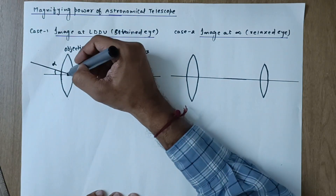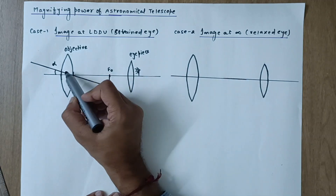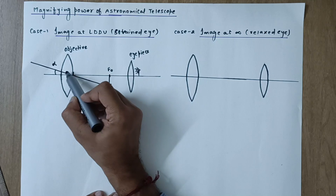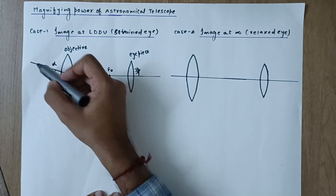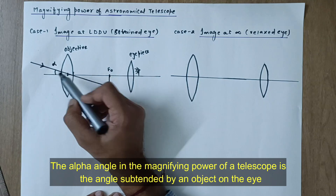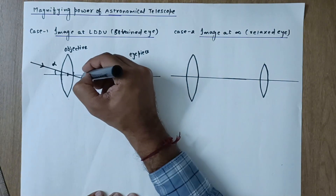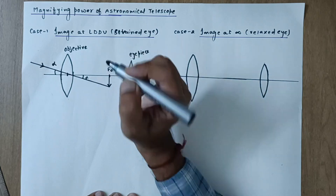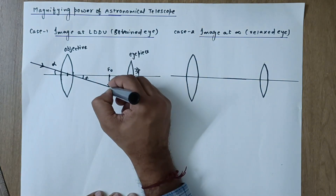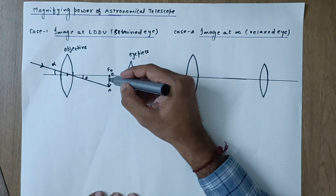The rays directly make angle alpha at the eye. If you imagine the lenses absent and the eye present at that position, the rays make angle alpha at the eye. Since this angle and the angle at the focal plane are vertically opposite angles, they are the same. Let us call the name of this intermediate image as AB. This is a real and inverted image.